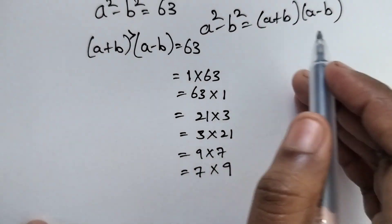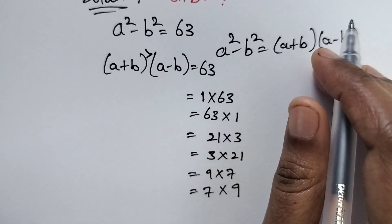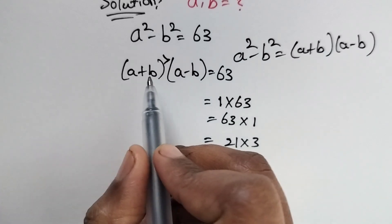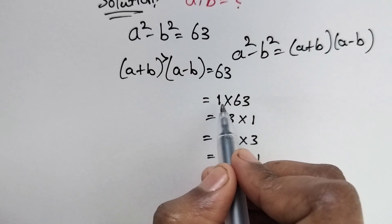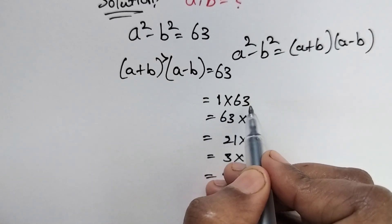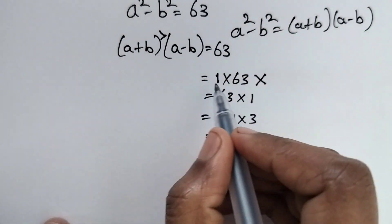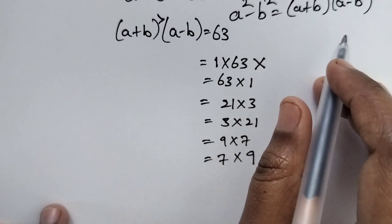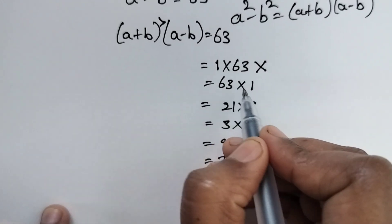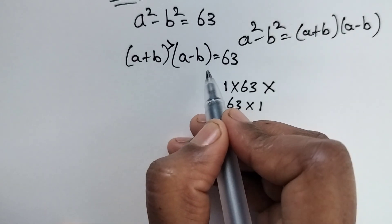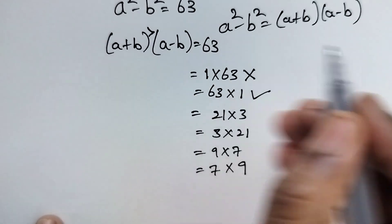Let's check each pair. For 1 times 63: 1 is less than 63, so this is not satisfied. For 63 times 1: 63 is greater than 1, so this factor pair is satisfied with the condition.